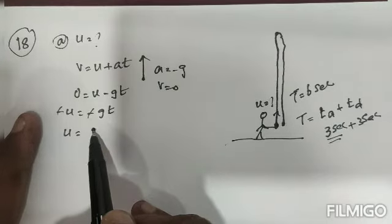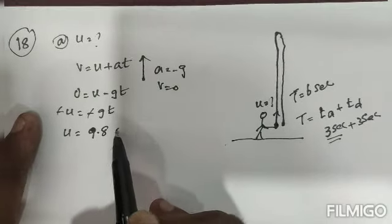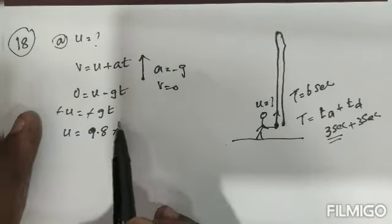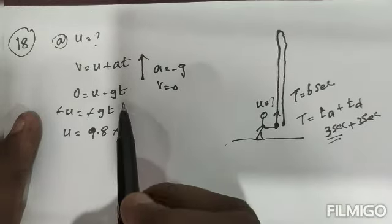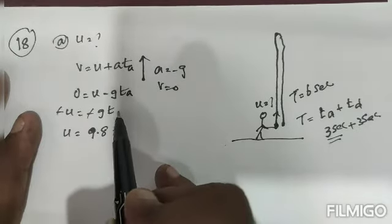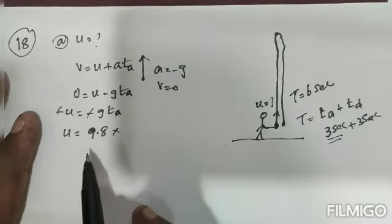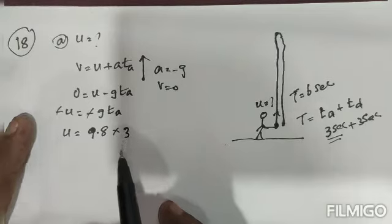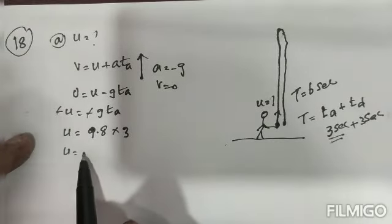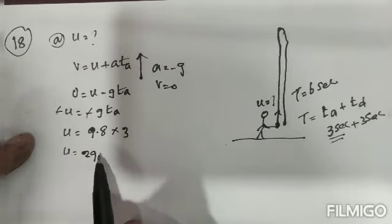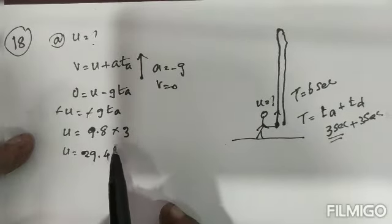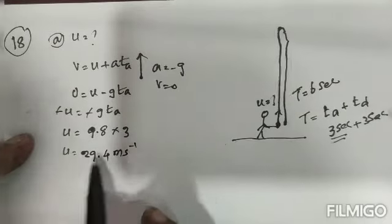We can write u = g × t, where g = 9.8 m/s² and the time of ascending is 3 seconds. Therefore u = 9.8 × 3 = 29.4 meters per second. So the initial velocity is 29.4 m/s.